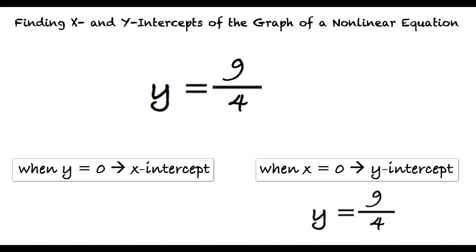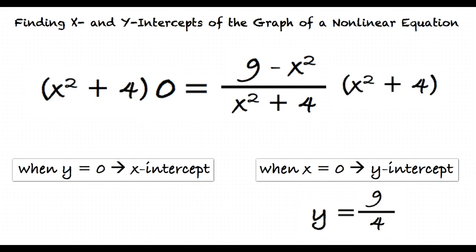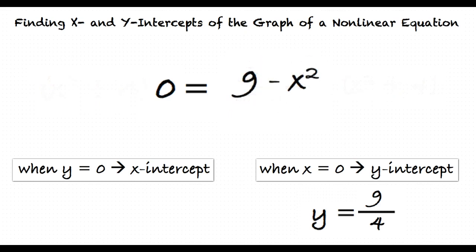To find the x-intercept, substitute 0 for y to yield 0 = (9 - x²)/(x² + 4). To eliminate the fraction, multiply both sides of the equation by the denominator, resulting in 9 - x² = 0.